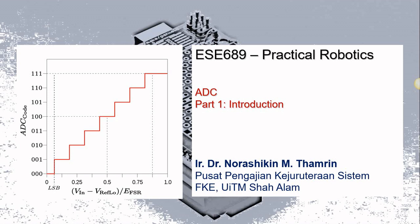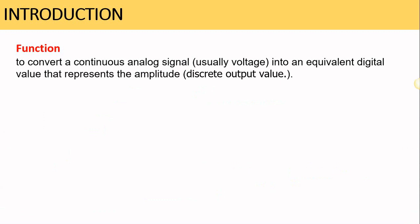So what is ADC? ADC, or analog-to-digital converter, is a component whose function is to convert a continuous analog signal — usually a voltage — into an equivalent digital value that represents the amplitude, or discrete output value.